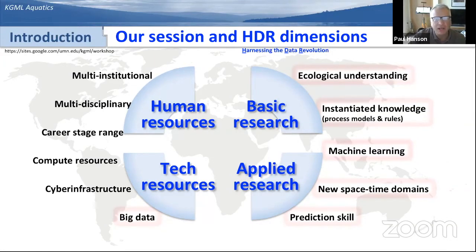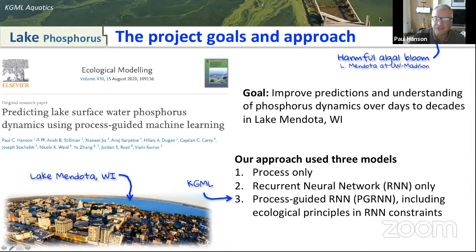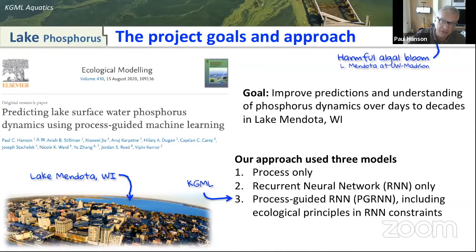I'm going to switch gears and give you a specific example of the implementation of KGML in a lake — Lake Mendota, Wisconsin, which is in Madison. It's a pretty simple example: it models lake phosphorus. Phosphorus is a limiting nutrient for primary production in lakes and is responsible at high concentrations for harmful algal blooms and other water quality problems. This bar at the top is a picture of the surface of Lake Mendota covered in a scum of algae. Our goal was to improve predictions over broad time scales — from days up to decades — using three different approaches: a process-only model, a recurrent neural network, and combining those two to create the KGML.